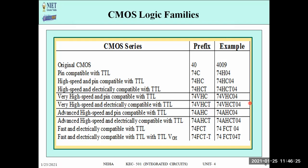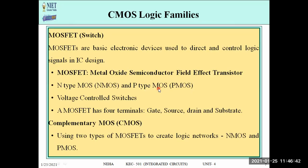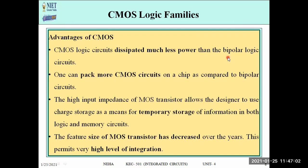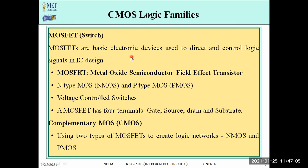This unit focuses on understanding CMOS and how to design it for different logic circuits — gates, combinational circuits, and sequential circuits. Before studying CMOS, we need to understand the MOSFET. A MOSFET (Metal Oxide Semiconductor Field Effect Transistor) acts as a switch and is used to direct and control logic signals in IC design.